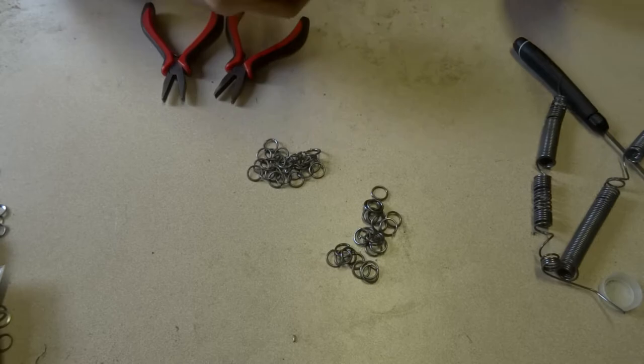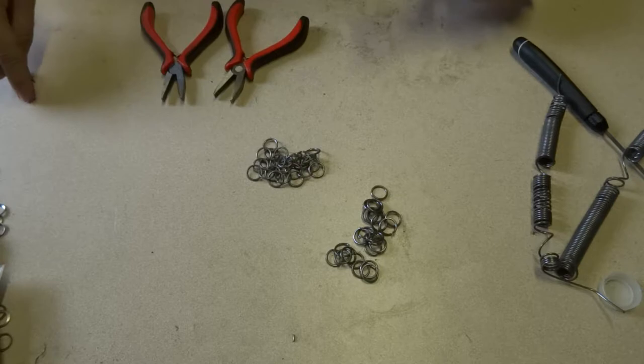Once you have some coils made, you can start cutting them into rings. This is where your wire cutter comes in.